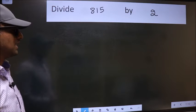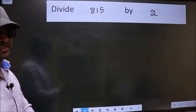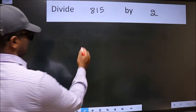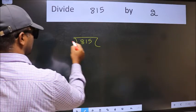Divide 815 by 2. To do this division, we should frame it in this way. 815 here and 2 here.